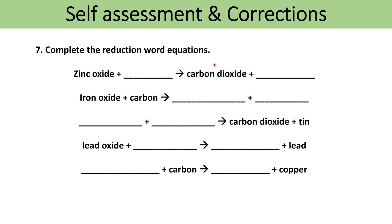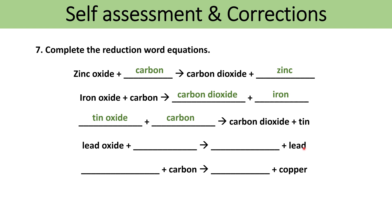Now let's complete these word equations. Zinc oxide plus carbon makes carbon dioxide plus zinc. Iron oxide plus carbon makes carbon dioxide plus iron. Tin oxide plus carbon makes carbon dioxide plus tin. Lead oxide plus carbon makes carbon dioxide plus lead. And copper oxide plus carbon makes carbon dioxide plus copper, because carbon is more reactive than copper and removes the oxygen.